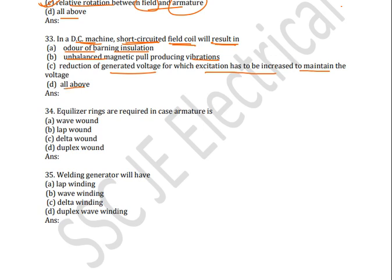If you know the answer, just answer in comments. The correct answer is all of these. When field coils get short-circuited, there will be odour of burning insulation — the insulation will burn and smell will come out. There will be unbalanced magnetic pull producing vibrations — the machine will vibrate. There will also be reduction of generated voltage, for which excitation has to be increased to maintain voltage. So D — all of these — is the correct answer.